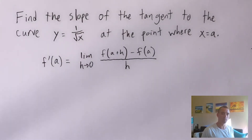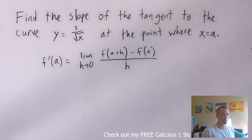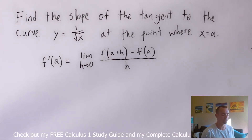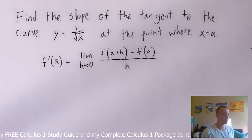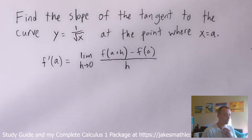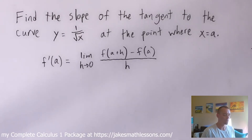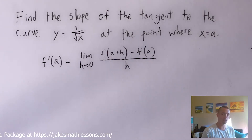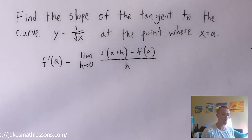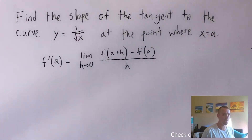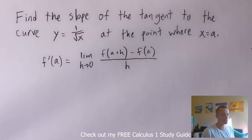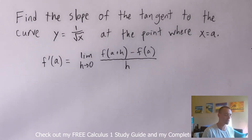The problem we're going to be going over today is finding the slope of the tangent to the curve y equals one over the square root of x at the point where x equals a. In this case, a is an unknown constant, so we don't know what that number is. But what we want to do is come up with a generic equation that depends on a, which tells us the slope of the tangent line to this curve at that a value. So if you are given some a, you can just plug that in to figure out the slope of the tangent line.